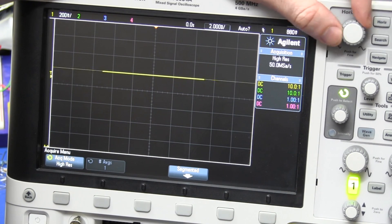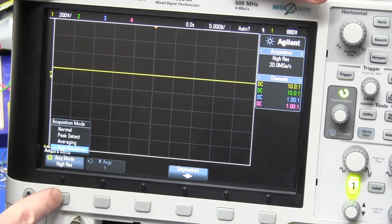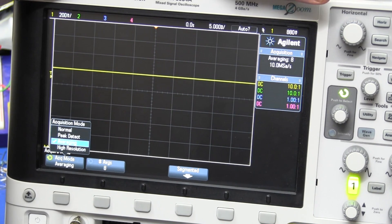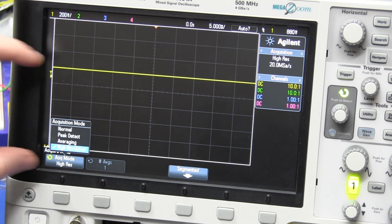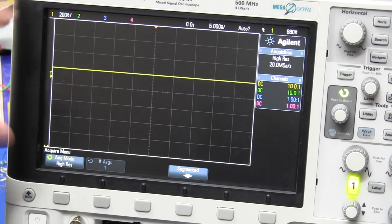But at the lower time bases, it really averages out that high frequency noise, as opposed to average mode, which is a bit different. It works differently, and I won't explain that, but high resolution mode can be quite neat, and you can get much improved vertical resolution on your scope compared to normal mode.